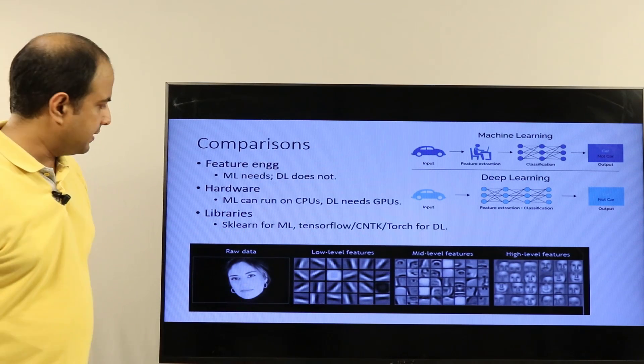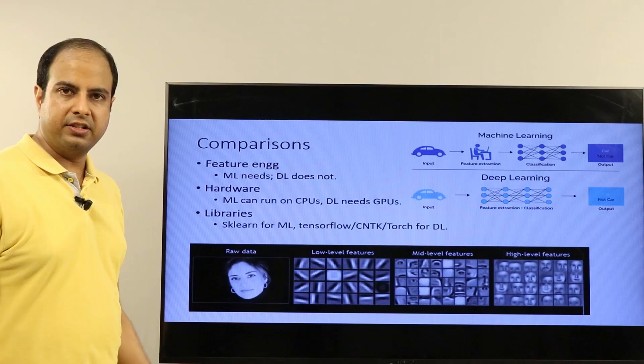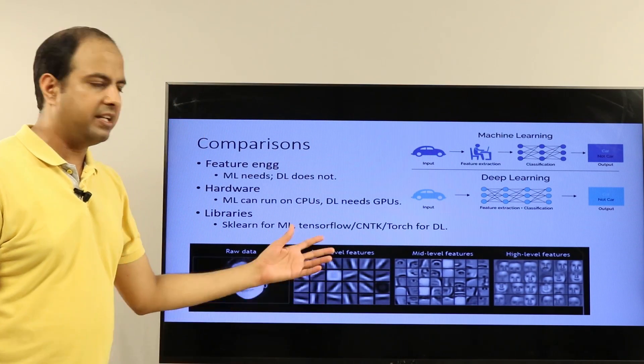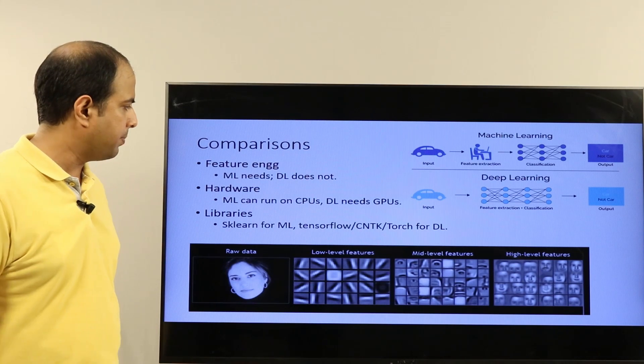Libraries: popular libraries in Python for machine learning include scikit-learn, while for deep learning all of these are reasonably popular—TensorFlow, CNTK, Torch, PyTorch—these are all popular libraries for deep learning.